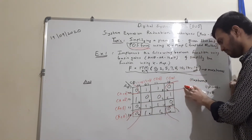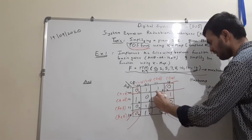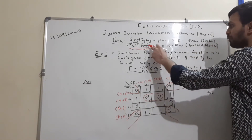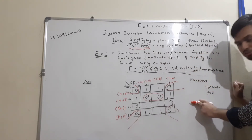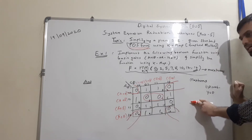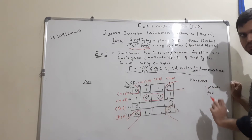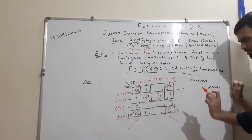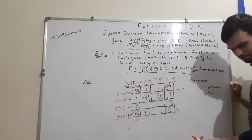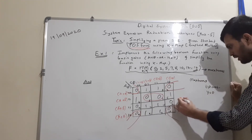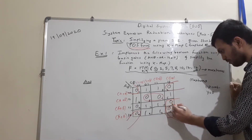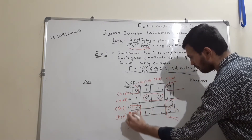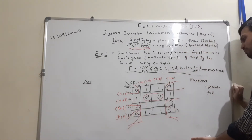When solving for POS form, never group 1s — because grouping 1s is what you do when deriving or simplifying in SOP form. For POS, you only group 0s. The 1s are filled in but not used in the grouping or simplifying process. We also form a pair from max terms 5 and 7, another quad from max terms 10 and 14, and a quad from max terms 12 and 8. We have now finished the maximum available groupings.